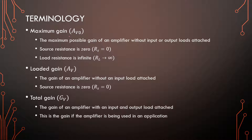The loaded gain, AV, is a typical one that you always see, and that is when there is a load attached to the amplifier and the source has no impedance of its own. Typically you design an amplifier with a specific load in mind, so this is why AV is the more typical one to see.